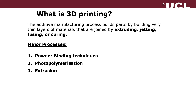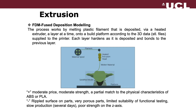Photopolymerization is one of the oldest methods, where you have a resin that cures on exposure to light. You have a box with liquid, and then you shine the light layer by layer to create an object. The most common method nowadays is extrusion, which involves a filament — a material made of plastic — fed into an extrusion head heated to around 200 degrees. As the plastic melts, it deposits the material layer by layer. It's quite good for developing small objects, though poor strength on the z-axis is one of the disadvantages.